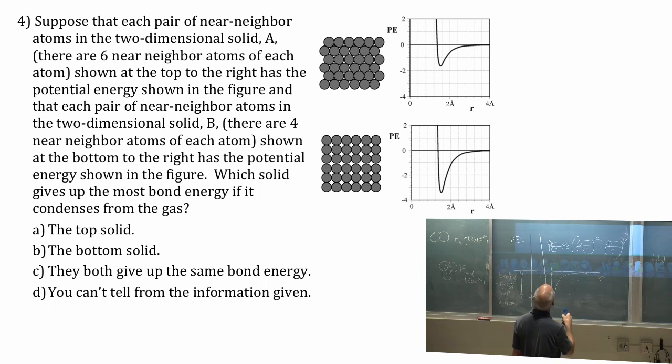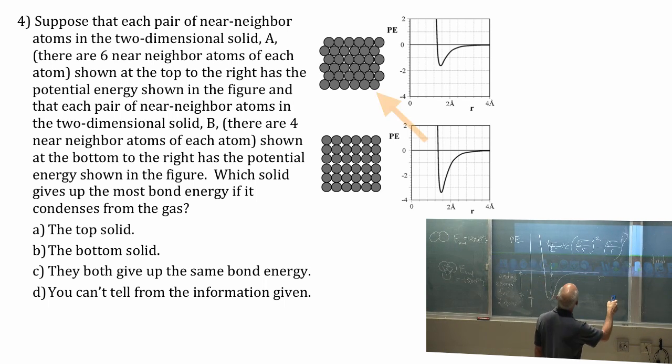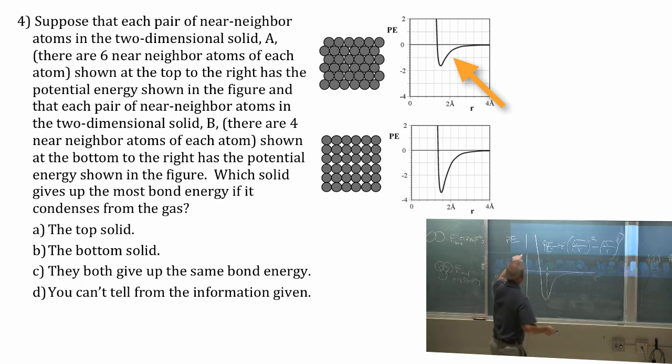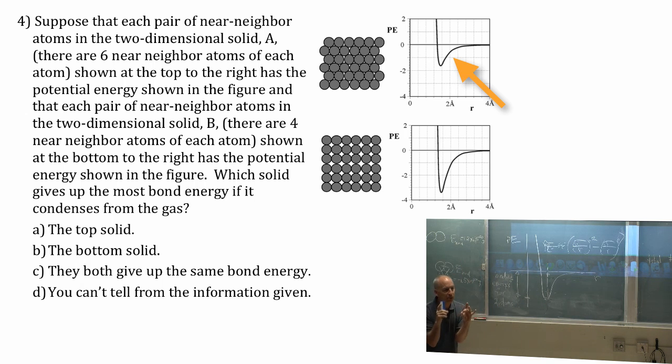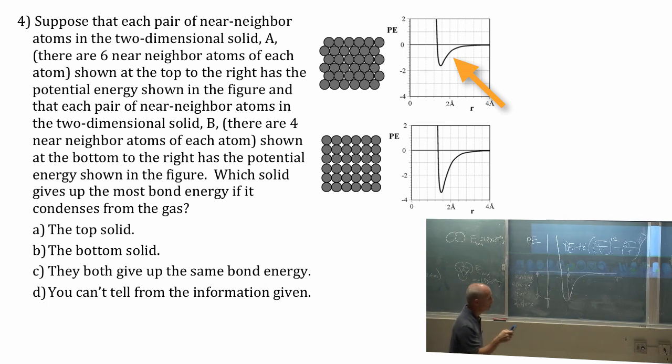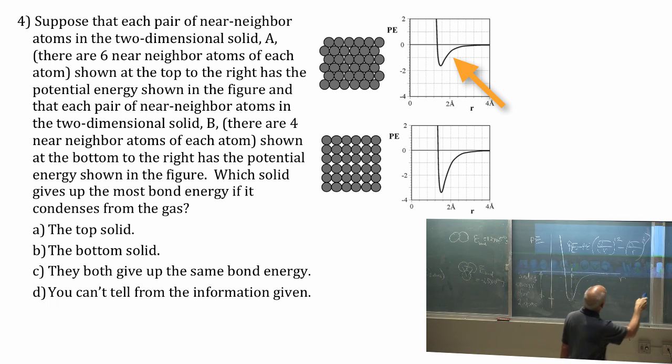Suppose that each pair of near-neighbor atoms in this solid right here has this potential energy. So remember these potential energies are always pair potentials is another way of putting it. They are for two atoms. Any two atoms. So here's the potential energy for two of those atoms.